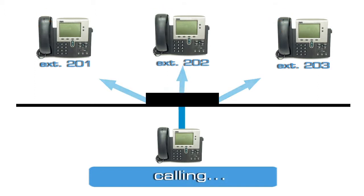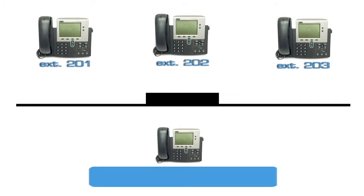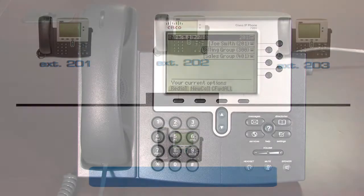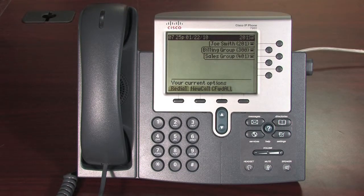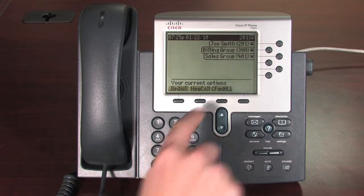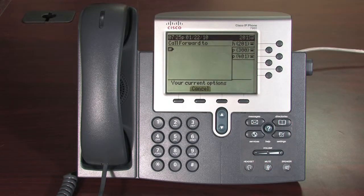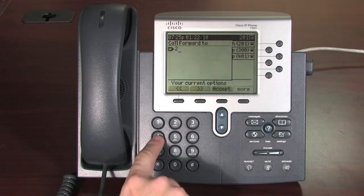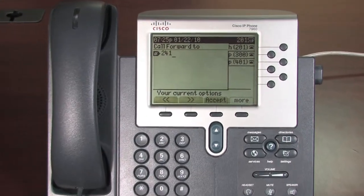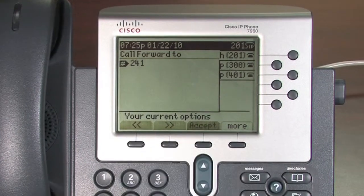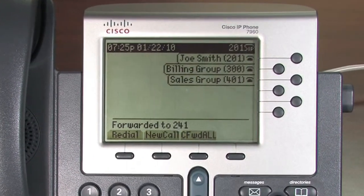In order to forward all incoming calls, press the Call Forward All soft key, dial the extension or external number to which you would like to forward all of your calls, and select the Accept soft key.